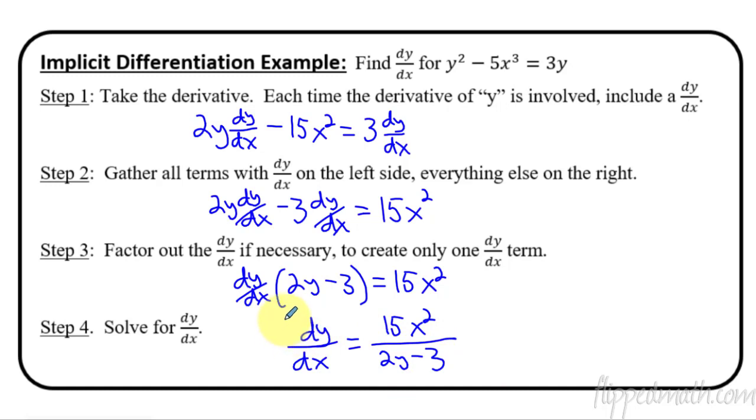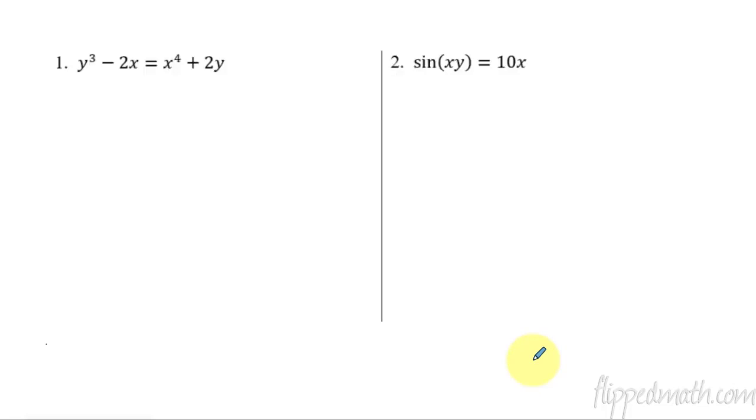Now this is the answer to that. This gives us the slope of the tangent line at any point we want. Before, we only had x values. Now we have x and y values. So in other words, if you want to know the slope of the tangent line, it's not just the x that you have to know. You're going to have to know both the x and the y to plug it in to an implicit derivative.